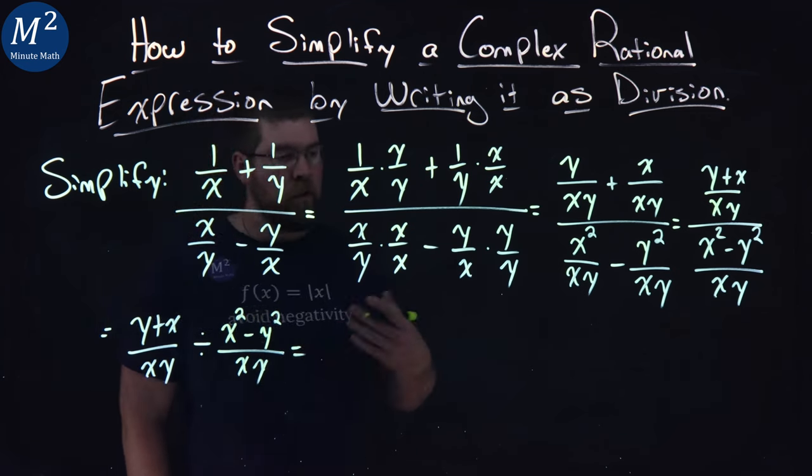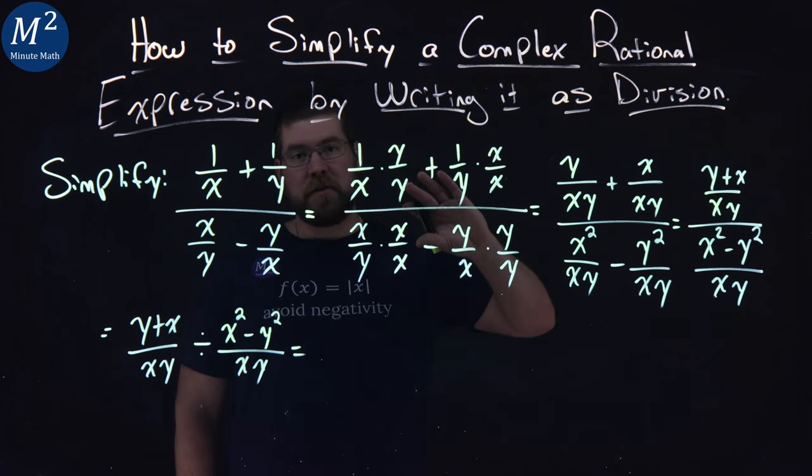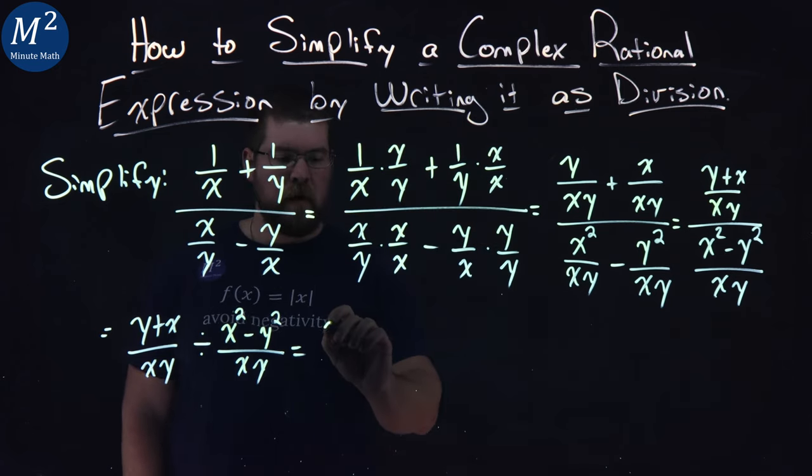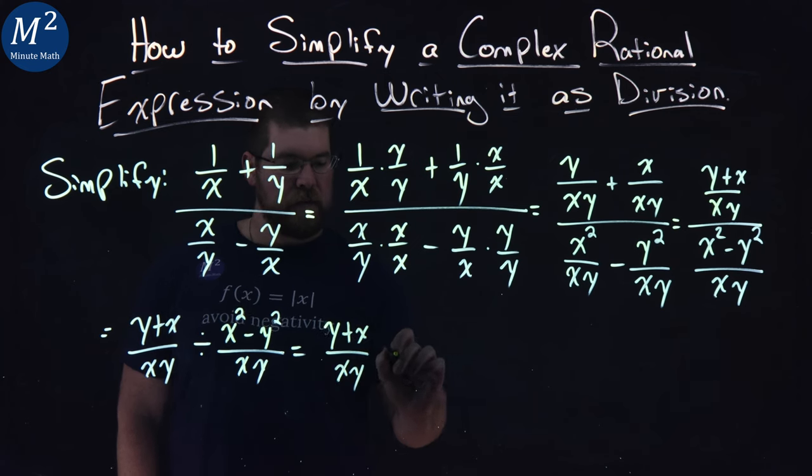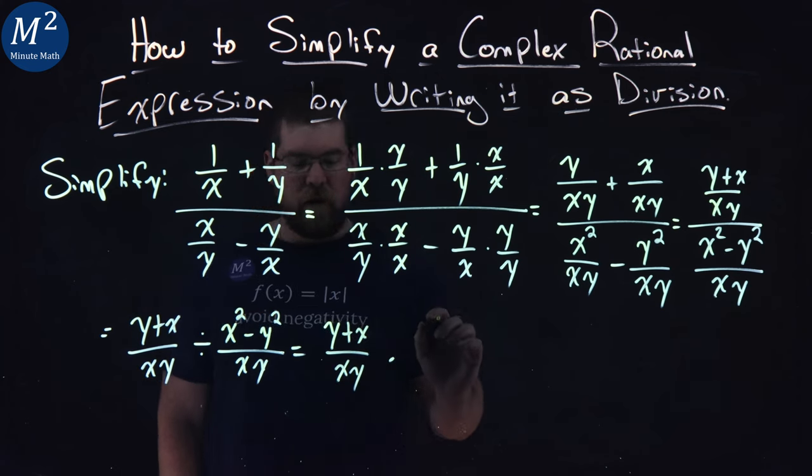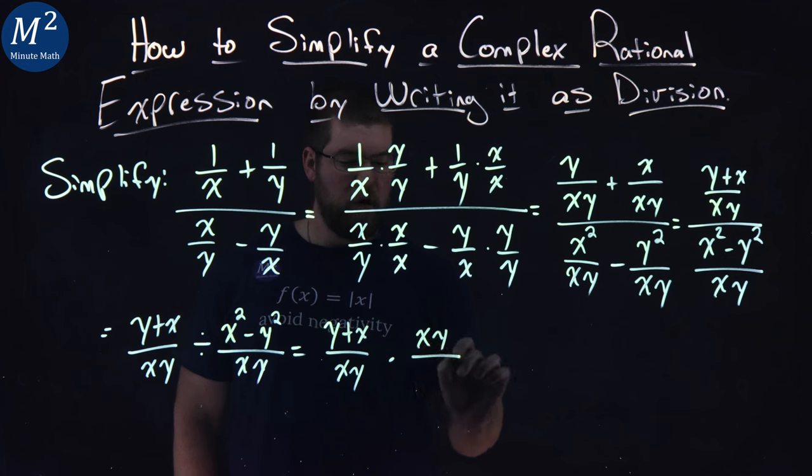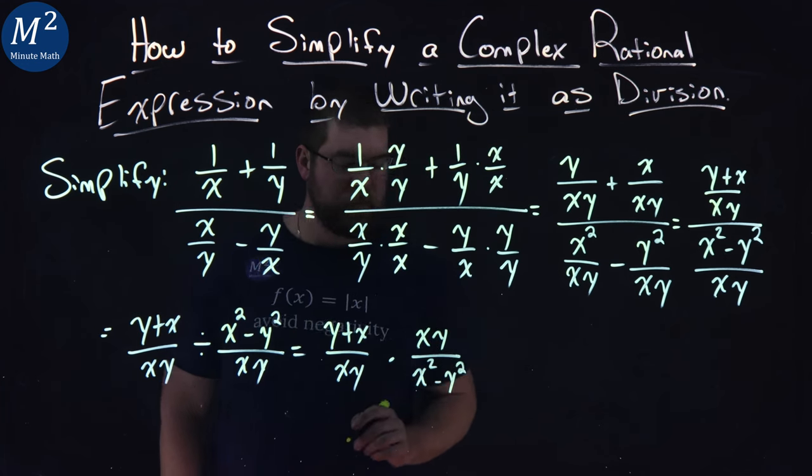From there, like always, division is the same thing as multiplication, just flipping the fraction around. So, we have y plus x over an xy. Times here, we have xy over an x squared minus a y squared. All right.